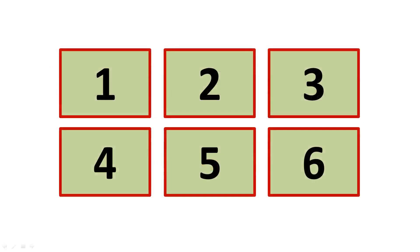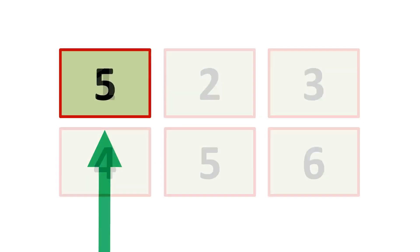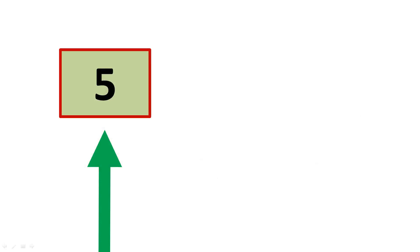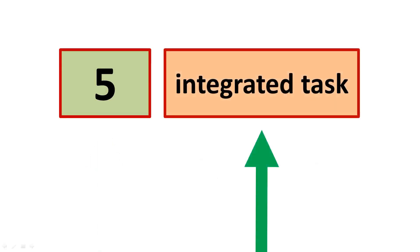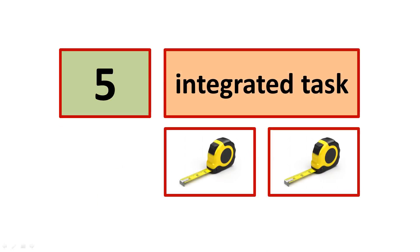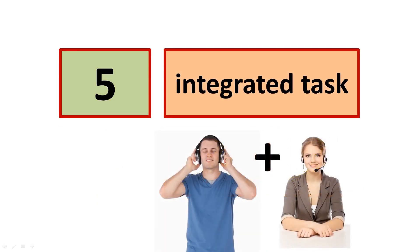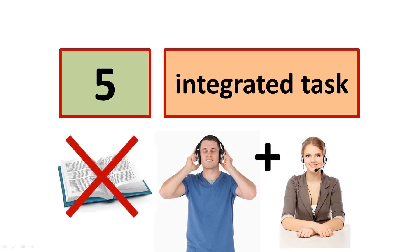As you know, there are six speaking tasks. In this video, we will focus on Task 5. Task 5 is an integrated task. This task measures your ability to integrate two skills: listening and speaking. There is no reading.